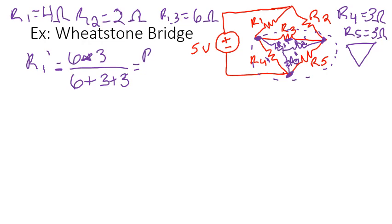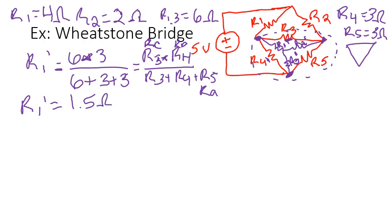So this is really R3 times R4 over R3 plus R4 plus R5. In my delta configuration, that resistor that is R3 labeled here is really like RC. The one that's labeled R4 here would be really like RB. And that leaves R5 was really like my RA. So what does that come out to be? R1 prime when I plug in 6 times 3 over 6 plus 3 plus 3 gets me 1.5 ohms.